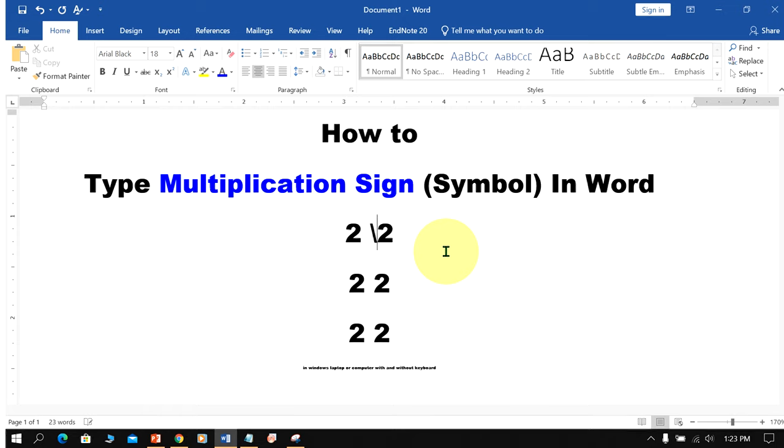Now when you type backslash c dot, you will get the multiplication dot. If you type backslash ast, you will get the asterisk sign.